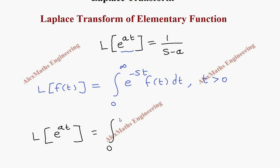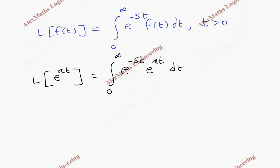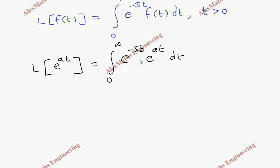This gives us the integral from 0 to infinity of e^(−st) times e^(at) dt. The condition here is that the value of s is taken as greater than a. Now we are going to make the product of these two terms.